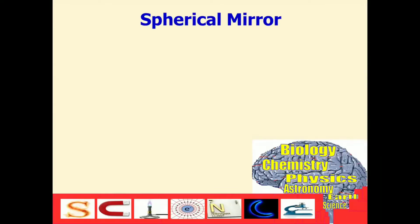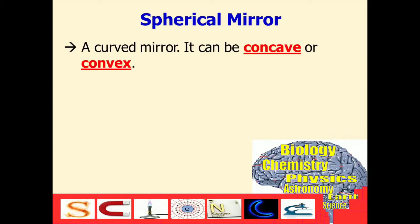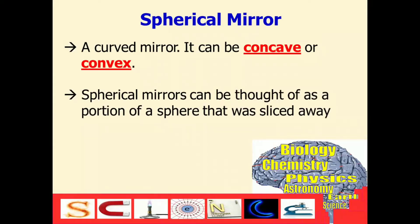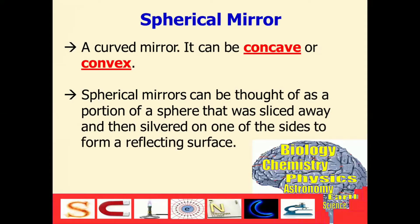What is a spherical mirror? Spherical mirror is also known as a curved mirror, and it can be concave or convex. Spherical mirrors can be thought of as a portion of a sphere that was sliced away, then silvered on one of the sides to form a reflecting surface.